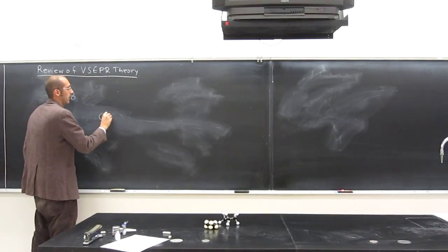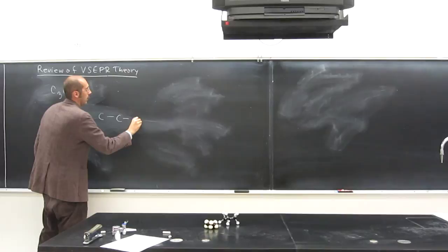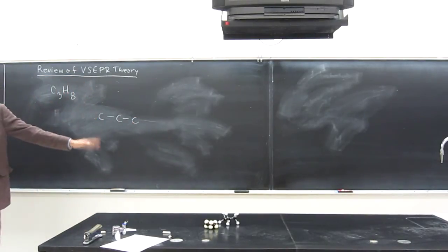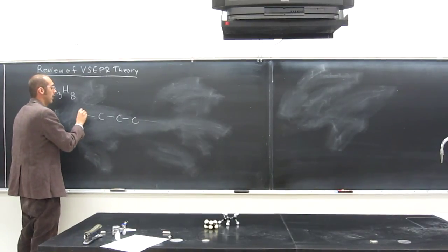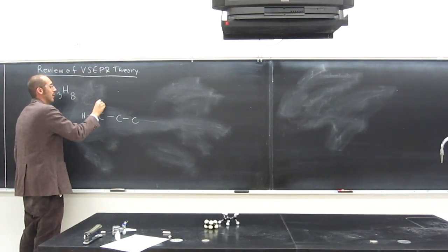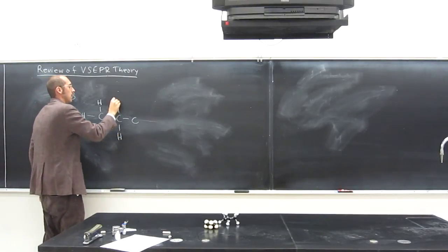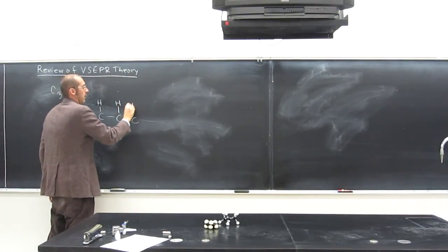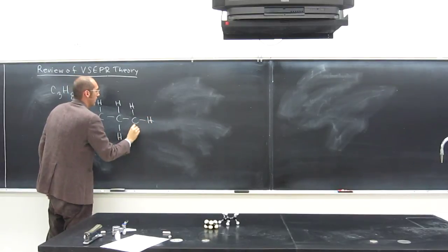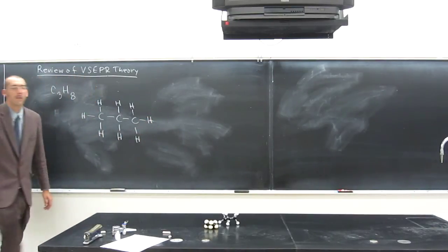So there's only one way this carbon chain can be made. Once we get to four, then you can kind of start making them different ways. And we'll talk about that. And then of course, each of those hydrogens is just going to be stuck on those carbons like that.